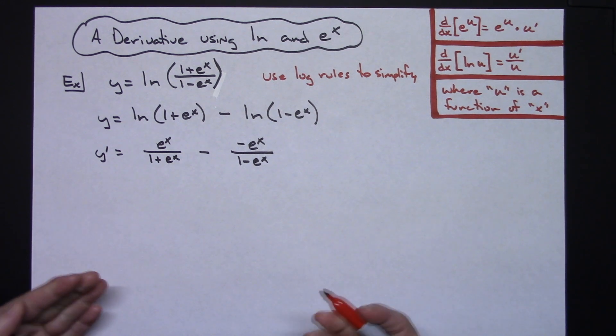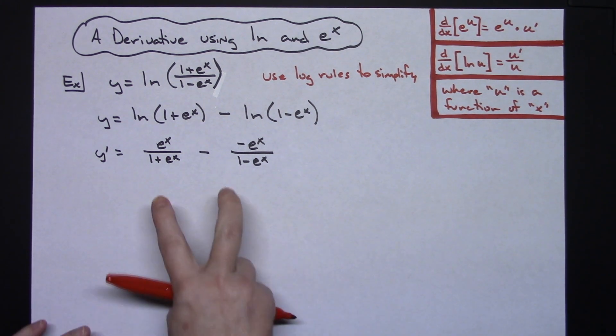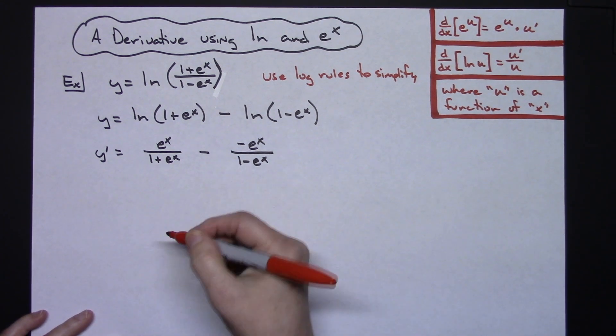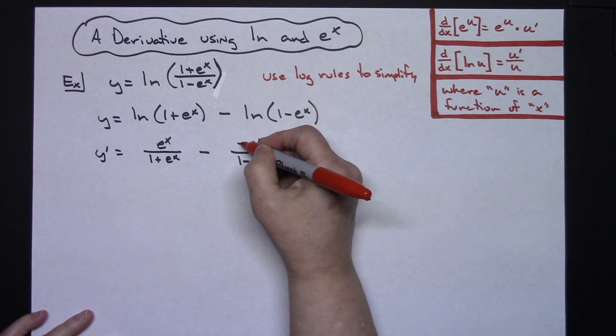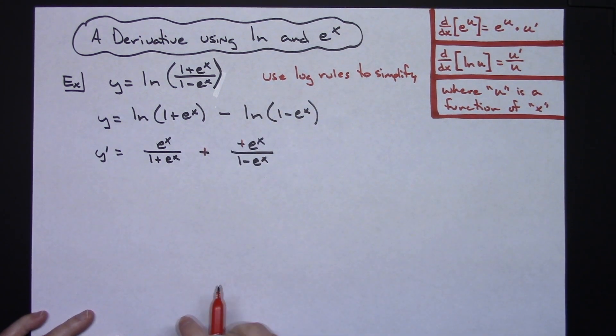Now at this point, technically you're done, you have taken the derivative. However I would probably get common denominators and write this as a single rational expression. The first thing I would do is change this to plus plus right there because we've got two minuses.